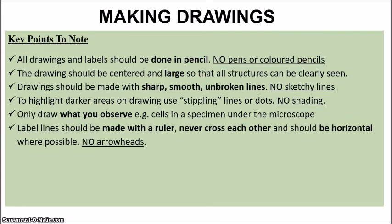Next, the label lines should be made with a ruler. They should never cross each other and usually should be horizontal where possible. So you also don't want any arrowheads at the end of your label lines. We don't want the label lines crossing over each other. They usually should be nice and parallel, horizontal to each other for neatness.